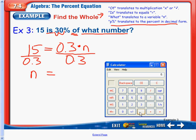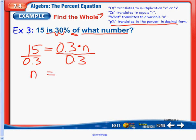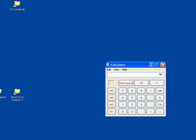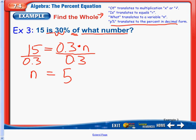Forgot my decimal. 15 divided by 0.3 gives us 50. So, we have 50 is n.